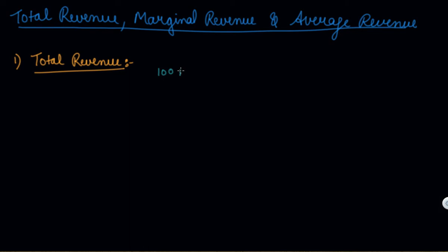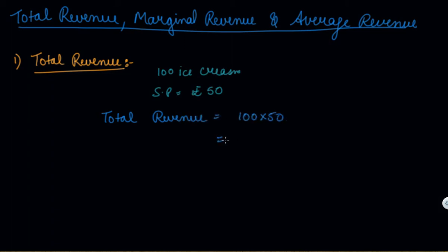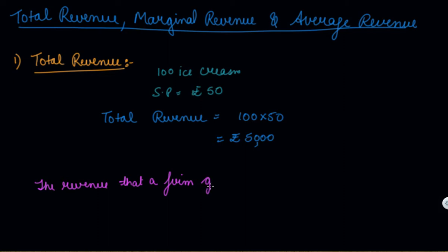For example, there are 100 ice creams and the selling price is Rs. 50. Then you can calculate your total revenue, which is 100 into 50, giving you Rs. 5000. So, total revenue is the revenue that a firm gets by selling a given output.